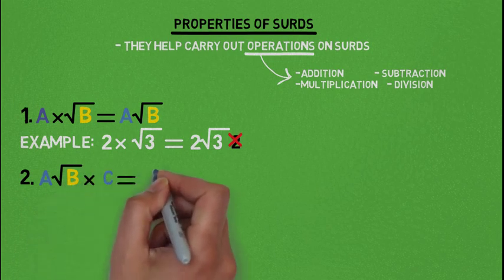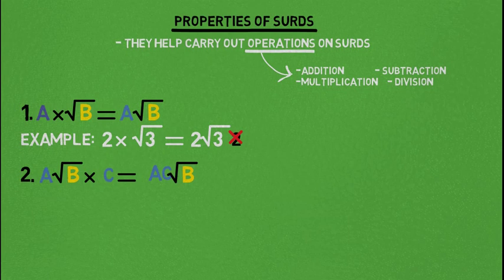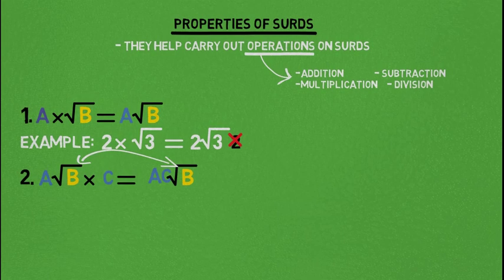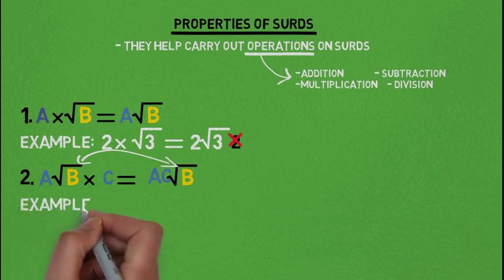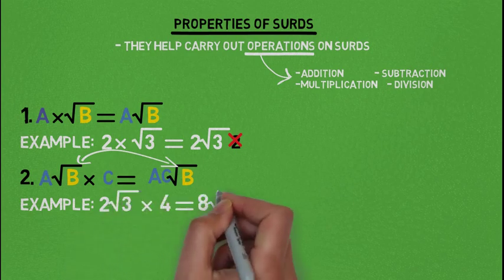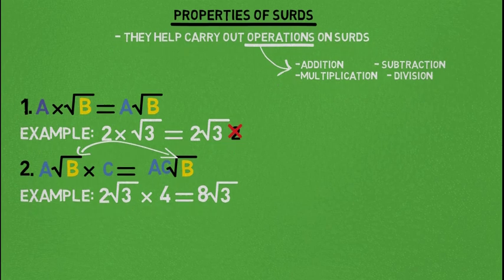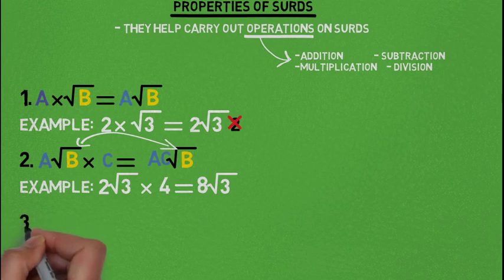Property number 2: A root B multiplying C gives AC root B. The number under the root sign is maintained — root B is maintained. A multiplies C. An example is 2 root 3 multiplying 4, which gives 8 root 3. The 4 multiplies the 2 to give us 8, and root 3 is maintained.